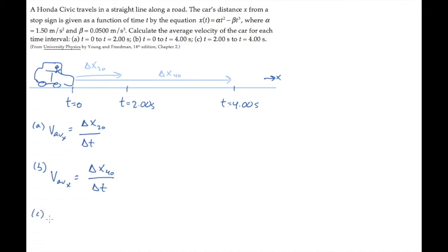Finally, part c asks for the average velocity between times 2 and 4 seconds. That displacement is shown here—the change in position from when t equals 2 seconds to 4 seconds.